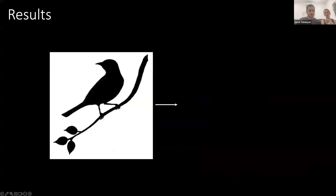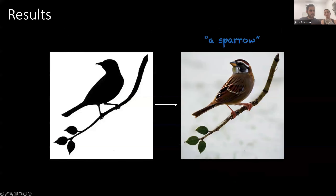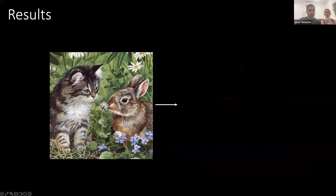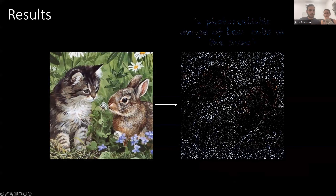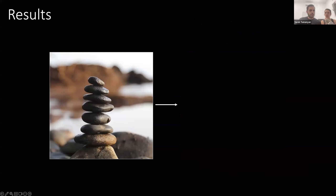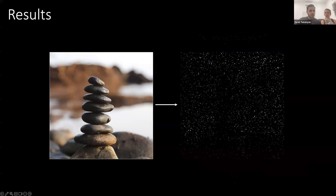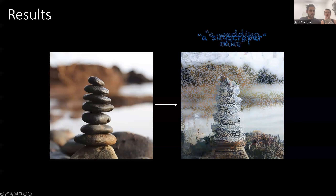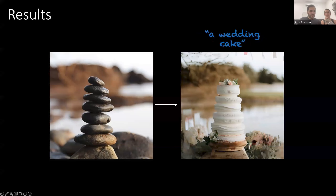Our method can handle minimalistic structural guidance images such as segmentations or silhouettes. It can also handle multiple objects — for example, we can turn them into a photorealistic image of pears or a polygonal illustration. We can also be creative, translating between very diverse classes such as stones to a skyscraper or stones to a wedding cake.